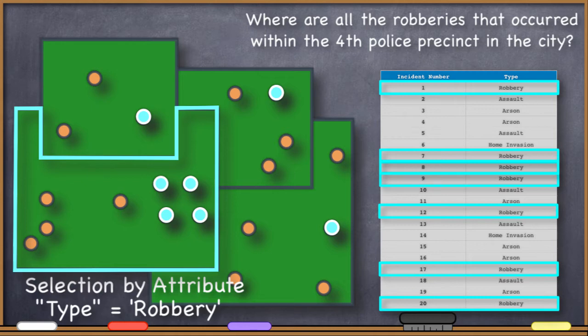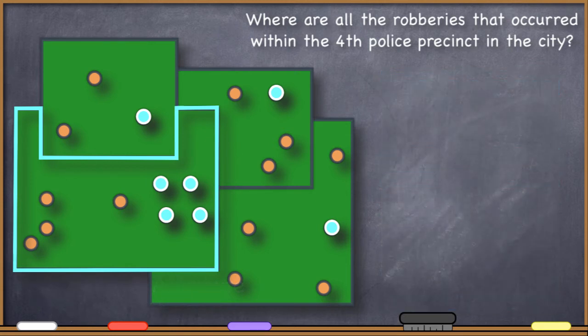So then I've got the results of two selection by attributes. I have the selection by attribute that gave me which one was the fourth precinct, and I've got a selection by attribute that gave me which of these crimes happened to be robberies. So then how do I find out which of those robberies are in the fourth police precinct?